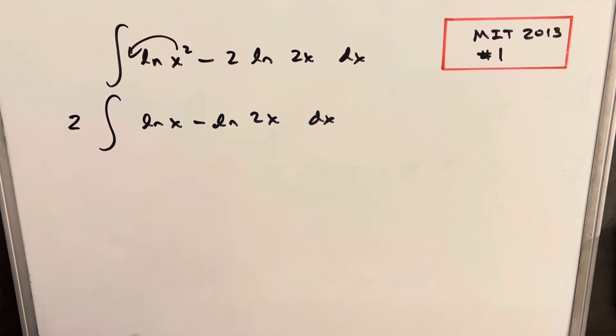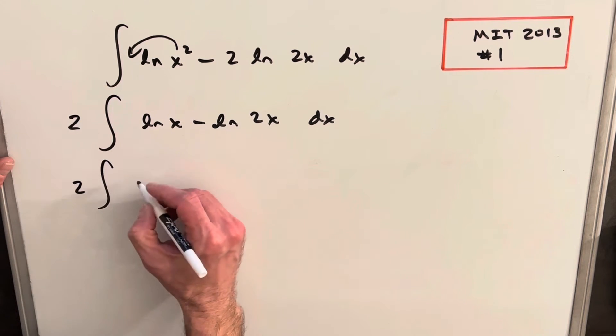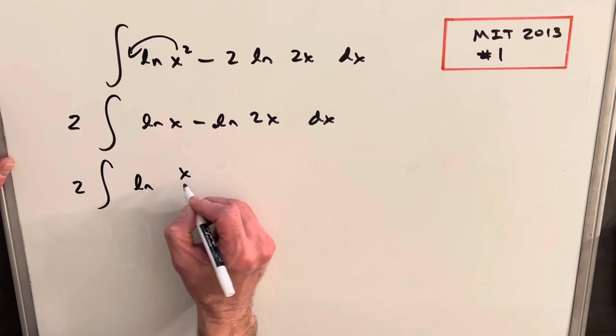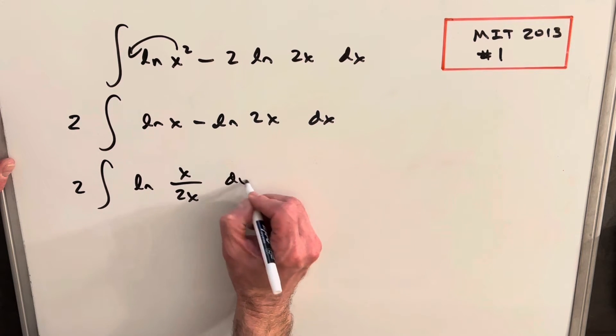But then because we're subtracting these two, we could write this as a division, so we can rewrite this again. We'll write it as a fraction like ln of x over 2x dx.